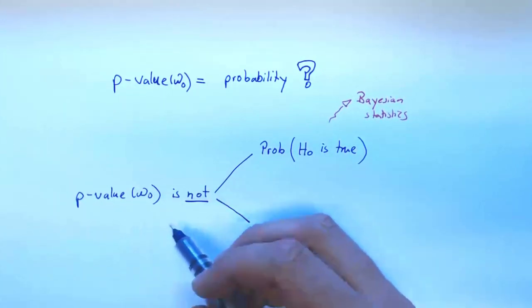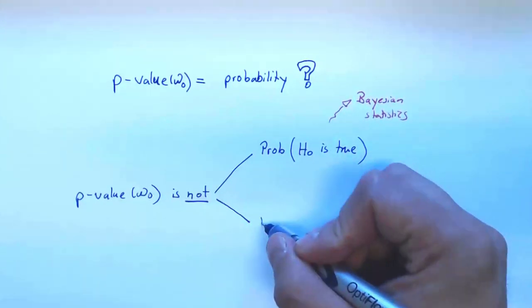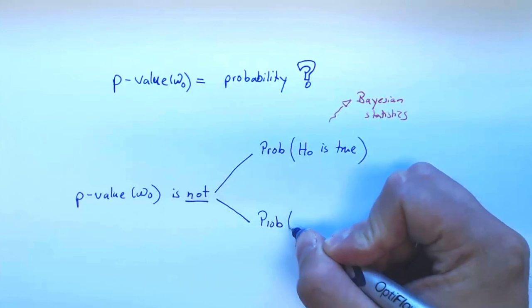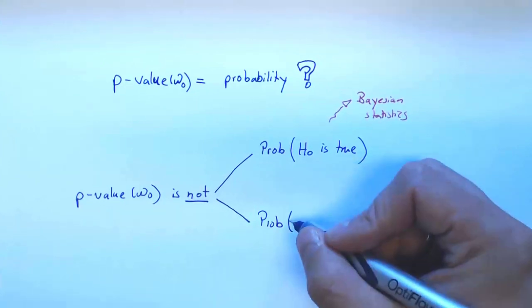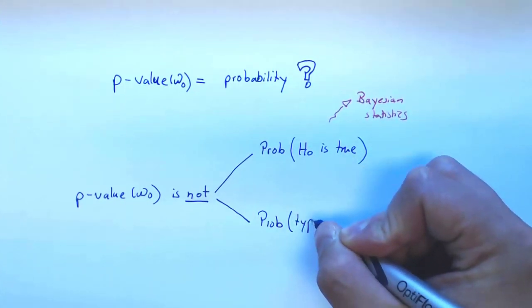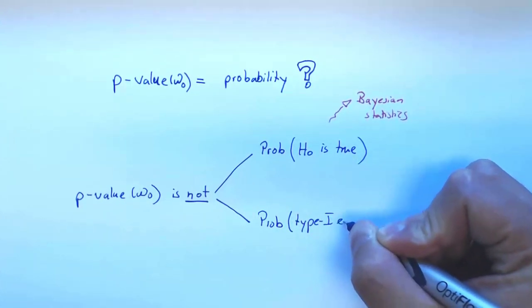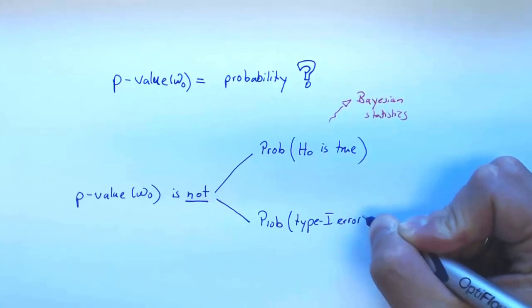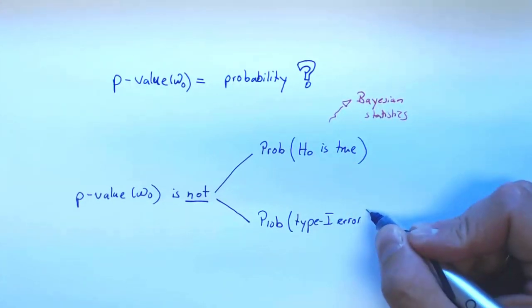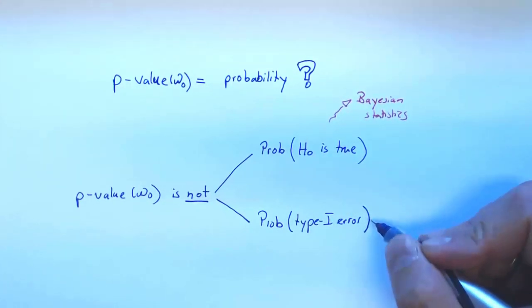Also, the p-value does not give you the probability of a type one error, and it does not estimate the probability of a type one error — nothing of the sort.